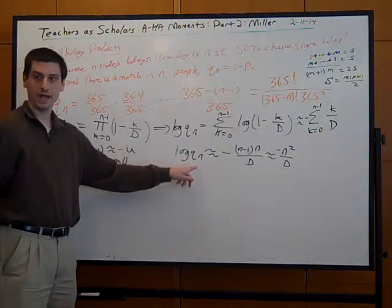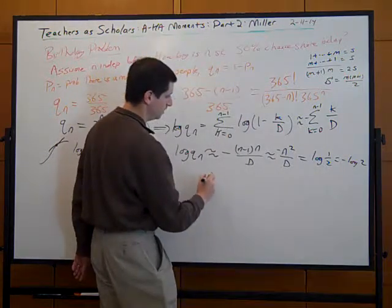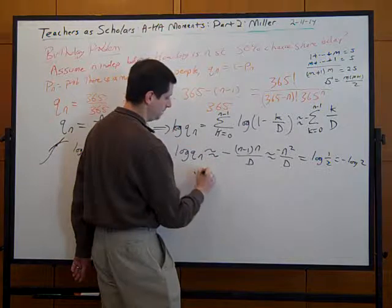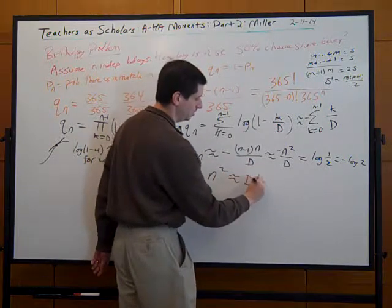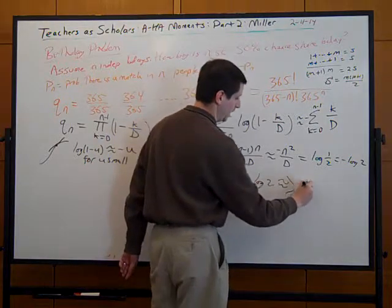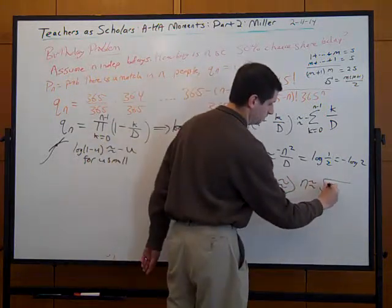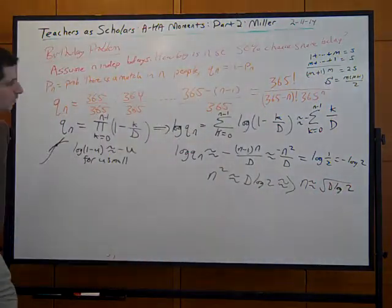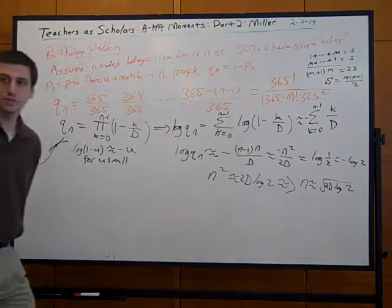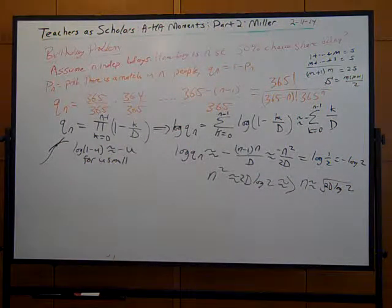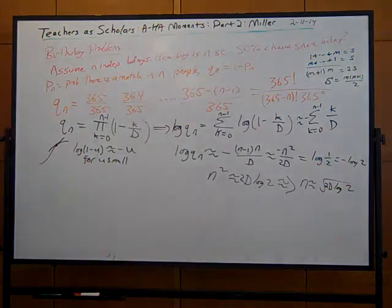If we want qn to equal one-half, then log(qn) = log(1/2) = -log 2. The negative signs cancel, giving n² ≈ D log 2, or therefore n ≈ sqrt(D log 2). This tells you how the birthday problem varies if you somehow get to Pluto.